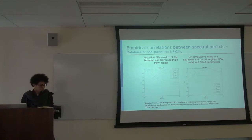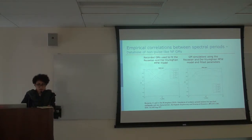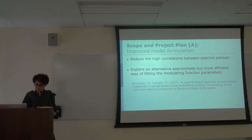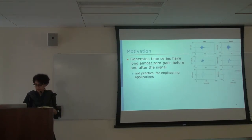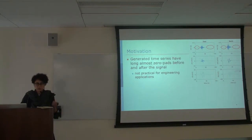These are examples of the correlations between spectral periods for recorded motions and for simulated motions, and you can see that our simulations tend to overestimate the correlations. As part of the scope of the current project, we aim to improve the formulation of our model to fix these problems, to reduce the high correlations between spectral periods, and also to explore an alternative and more efficient method of fitting the modulating function. Another issue to address is that the generated time series, due to the filtering we're applying, was resulting in very long near-zero pads before and after the simulated signal, which is not practical for engineering applications, so we're going to remove these.